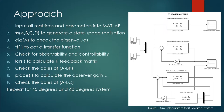To calculate the observer gain matrix L, we use the place command. After that, we check the poles of A minus LC to make sure they are also in the stable region. We compare it against the A minus BK poles. We repeat the process for the 45-degree and 60-degree systems. After compiling the code, we should have three sets of variables for 30, 45, and 60 degrees. In Simulink, we place a state-space block according to a reference figure, which we will discuss more when we are in Simulink.